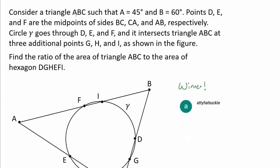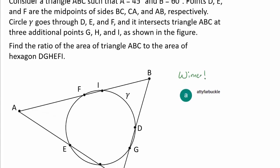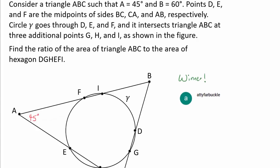Consider a triangle ABC, such that A is 45 degrees and B is 60 degrees. Points D, E, and F are the midpoints of sides BC, CA, and AB respectively.